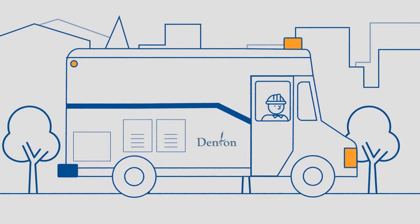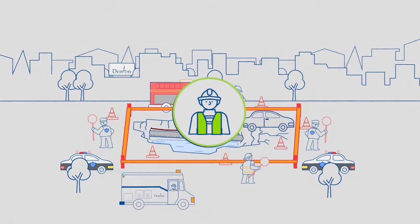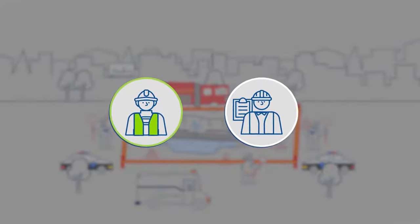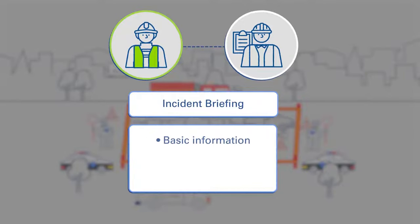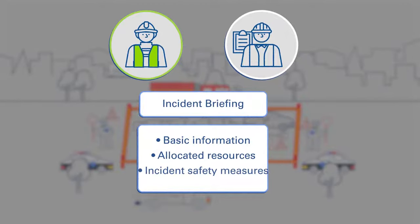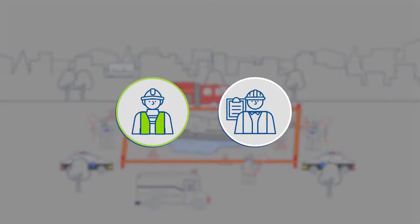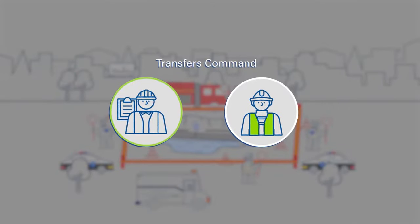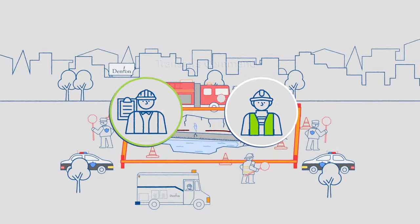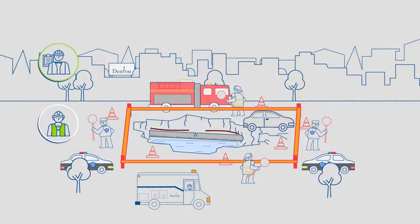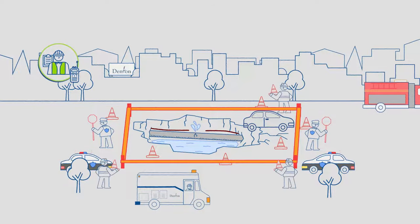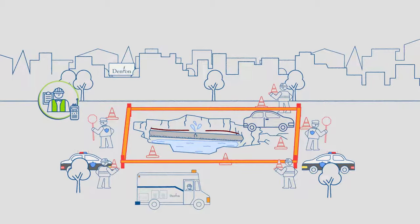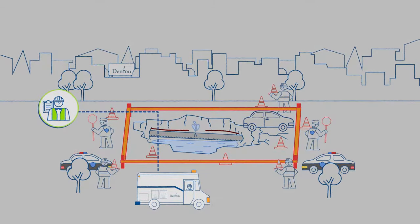Public Works dispatches a supervisor and four-person crew. When they arrive on scene, the supervisor reports to the Incident Commander for an incident briefing. This briefing includes basic information about the incident, the allocated resources, and the incident safety measures. Following the briefing, fire transfers command to Public Works, as it is determined that this is a Public Works incident and there are no life safety issues. The supervisor notifies dispatch about the transfer and puts on the green vest to clearly identify their new role as Incident Commander.